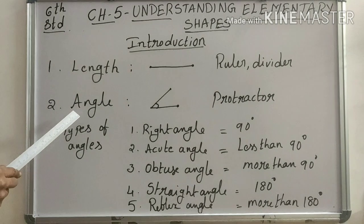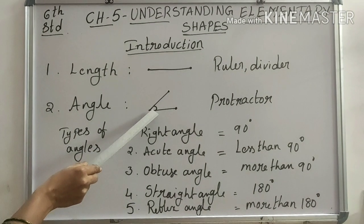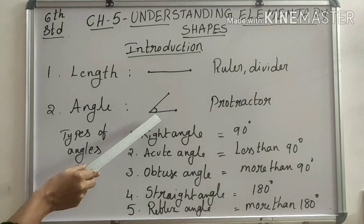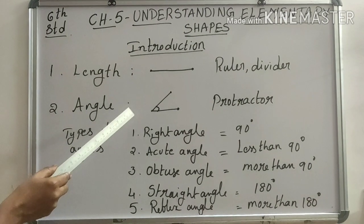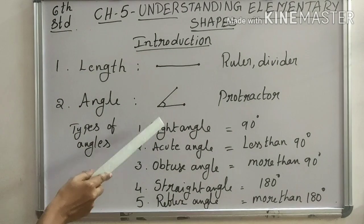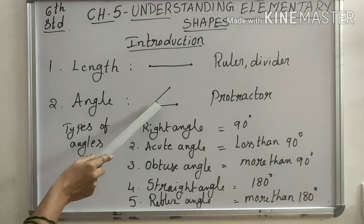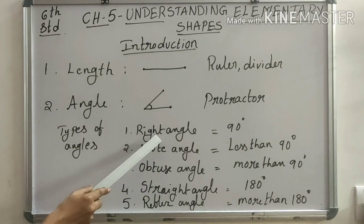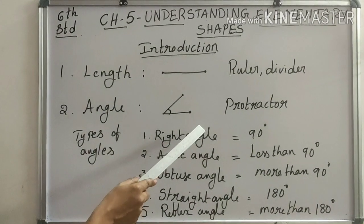Next, angle. The angle is made by intersecting of two lines or line segments. We can measure the angle by using protractor. If the angle between the two lines is 90 degrees, then we say that angle is right angle.